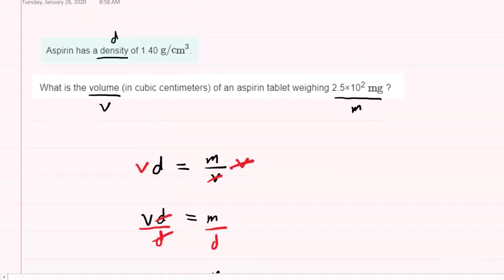So far so good. We do have to be careful, because the density is given in terms of grams, whereas the mass that's given is in milligrams. So this is an inconsistency in the units, which means we're going to want to convert from one to the other to establish a consistent value.